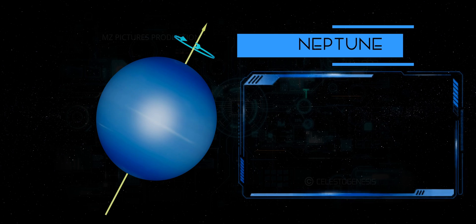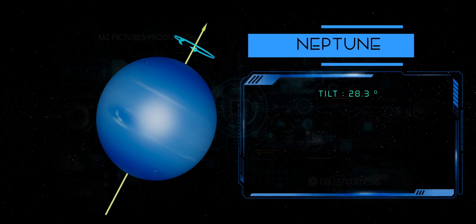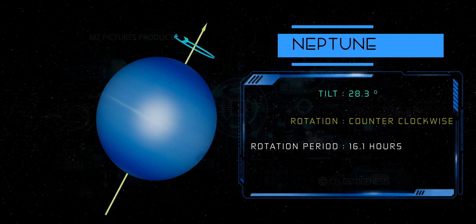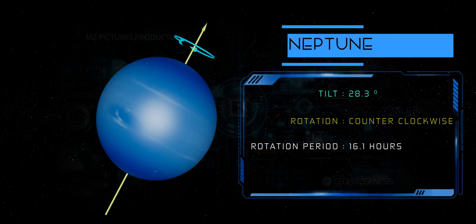Neptune. Neptune rotates counterclockwise, prograde, and completes one rotation in about 16 hours. Its axial tilt is similar to that of Earth, giving it similar seasonal variations.